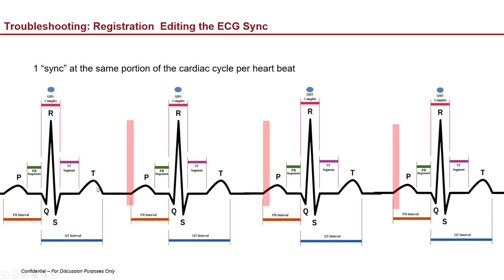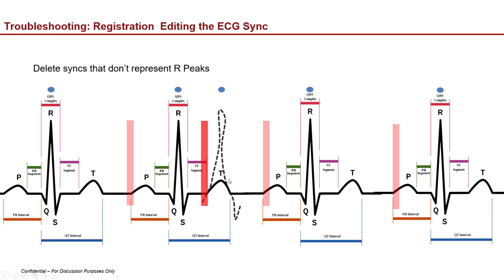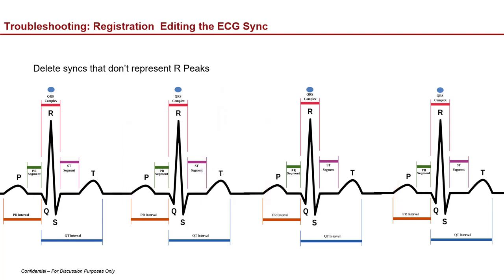Now let's troubleshoot how to register and edit the ECG. We have blue balls over our R peaks called syncs. Every CT scanner with a cardiac mode allows you to define your R peak with a sync. You'll want to delete syncs that don't represent your R peak — for example, if you have a really noisy ECG signal and that's not a real R peak, you right-click and delete it. Your reconstructions can then come from the same place based on actual heartbeats.